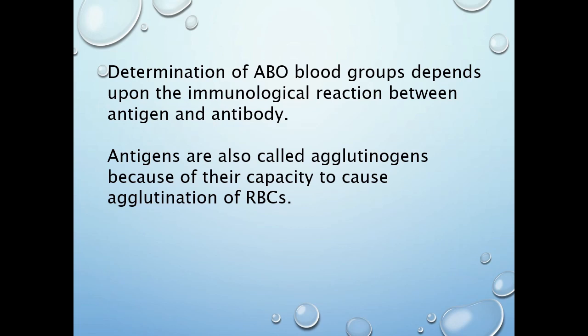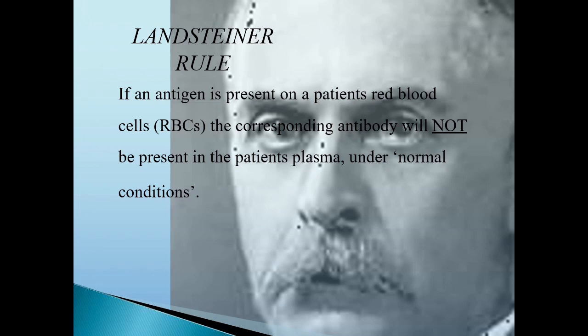The antigens naturally present on the surface of the RBC are also known as agglutinogens, because they have the property of bringing about agglutination of the RBC if the antibody of the same group is accidentally infused into the blood. As per Dr. Karl Landsteiner, the father of blood grouping, the antigen present on the red blood cell and its corresponding antibody will never be present in the plasma simultaneously, as this would cause an antigen-antibody reaction making blood unfit for circulation.